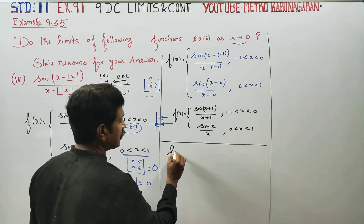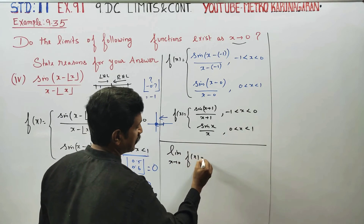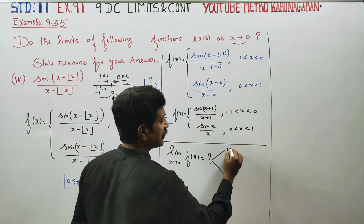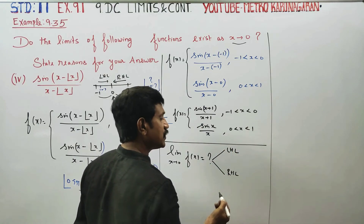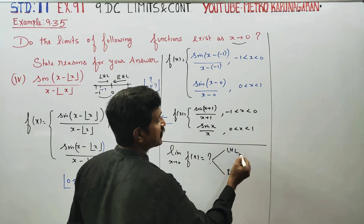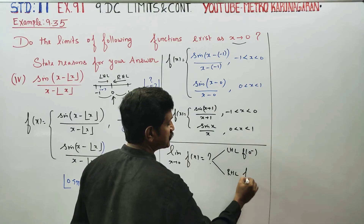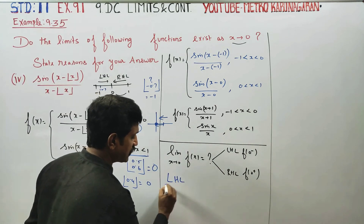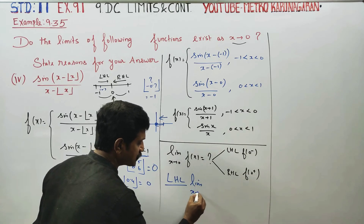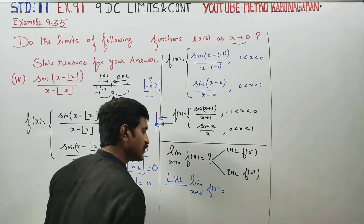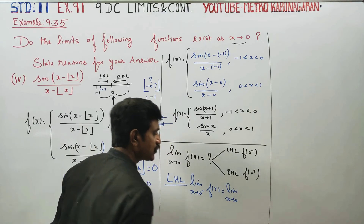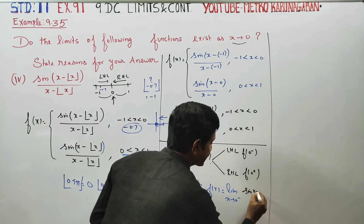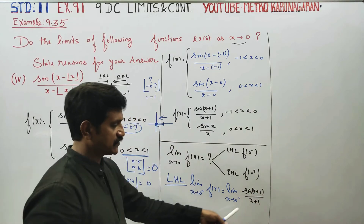Let me tell you, limit x tends to 0 of f of x. Find the limit. If we have two values — left-hand limit and right-hand limit — if it exists, the limit exists; otherwise the limit does not exist. Starting with the left-hand limit: limit x tends to 0 minus of f of x equals limit x tends to 0 minus of sin(x+1) by (x+1).